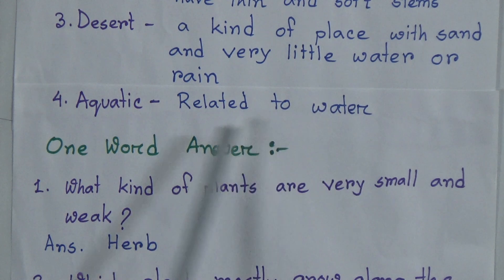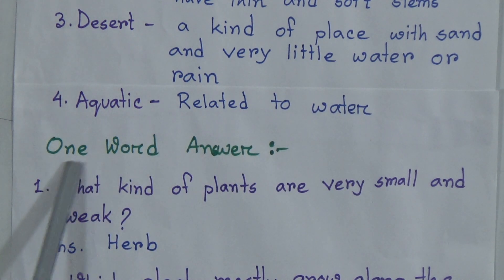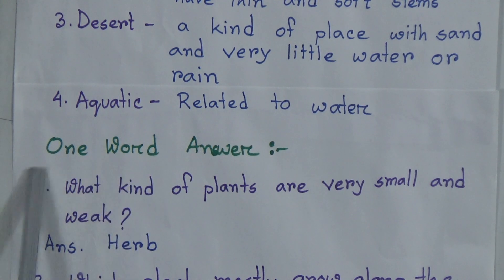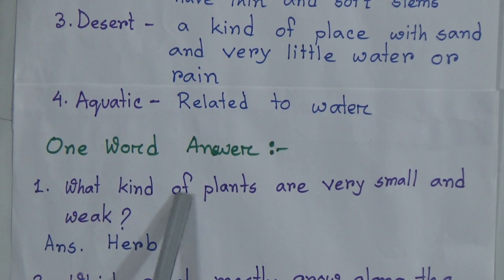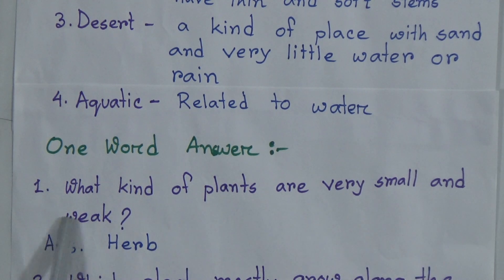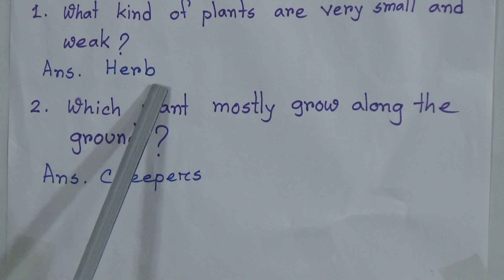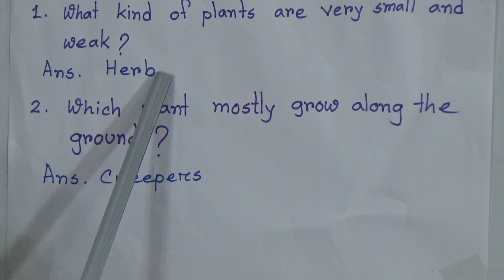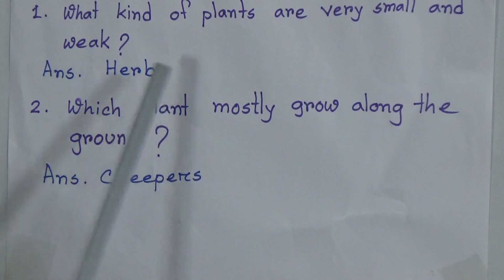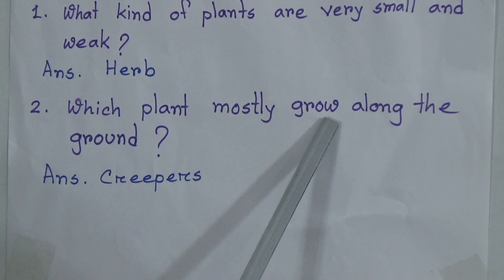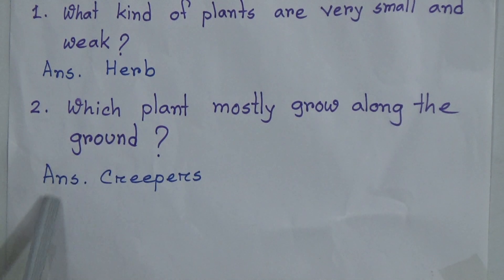Dear students, from this chapter you will get two one-word answers. First one: what kind of plants are very small and weak? The answer is herb. Note that in word meaning answers there will be no full stop.